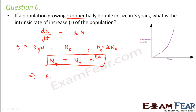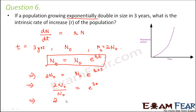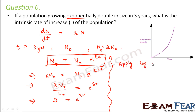So Nt is given as 2N₀, which equals N₀ × e^(r × t), where t is 3. Therefore, 2N₀ divided by N₀ equals e^(3r), or 2 = e^(3r). Now we apply log on both sides, giving log 2 = 3r × log e.